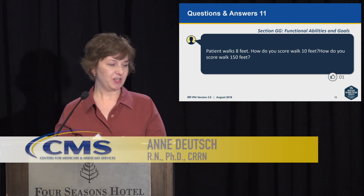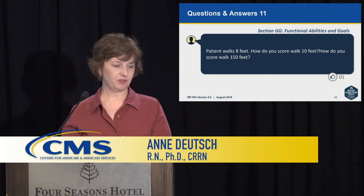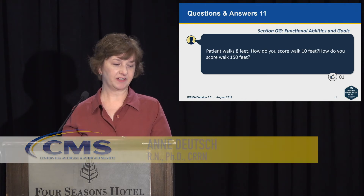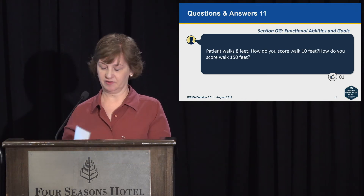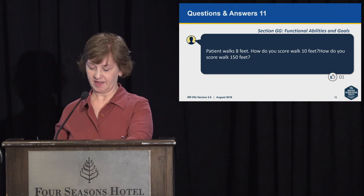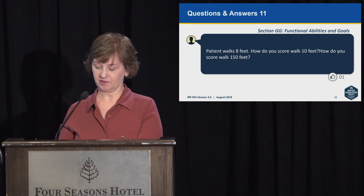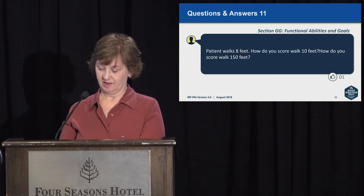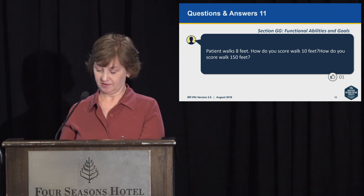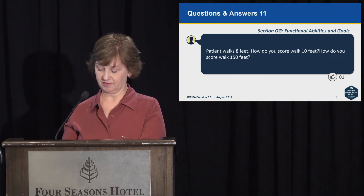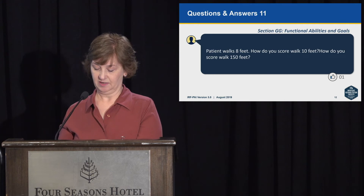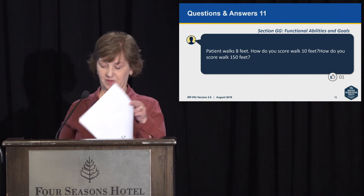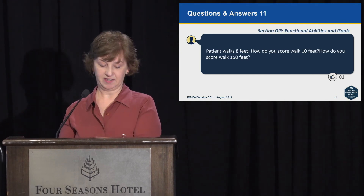Number 11: a patient walks 8 feet — how would you score walk 10 feet? How would you score 150 feet? For the walking activity to be coded using the six-point scale, the activity must be completed — that is, the patient must walk the entire distance. If with or without assistance a patient cannot walk the entire distance, the helper cannot complete the walking activity for the patient, and you would use one of the activity not attempted codes.